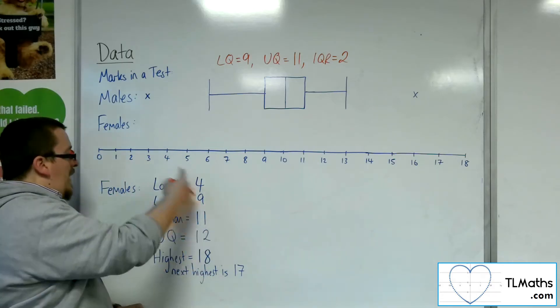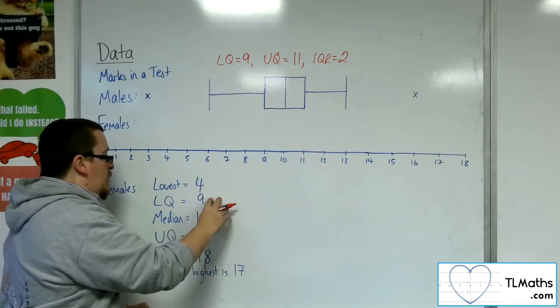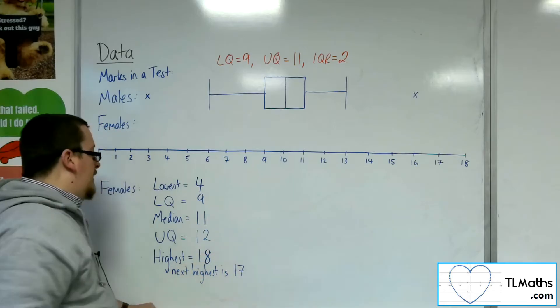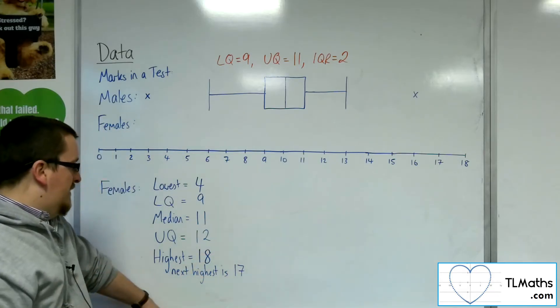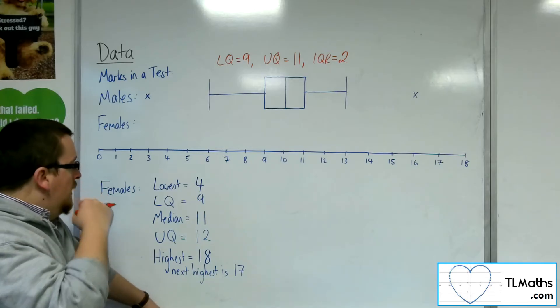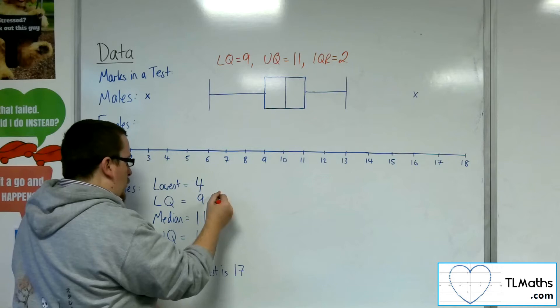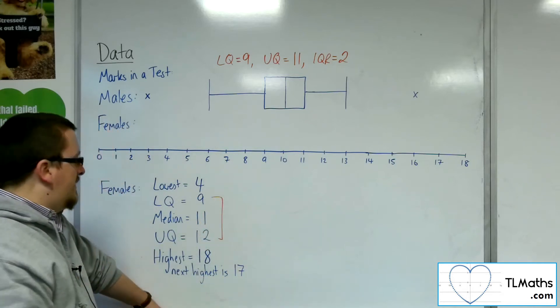So let's have a look at the female results. We've got the lowest value of 4, lower quartile 9, median 11, upper quartile 12, highest value is 18, and I've been told that the next highest is 17. So let's see what we do. Well, let's draw in the lower quartile, median, and upper quartile first. That's the easy bit. That's still the GCSE bit.